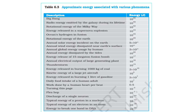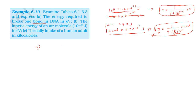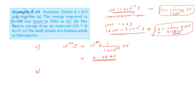The energy required to break one bond in DNA is 10 power minus 20 joules. Converting using 1.6 into 10 power minus 19 electron volts per joule gives approximately 0.06 electron volts. For the second part, the kinetic energy of an air molecule is 10 power minus 21 joules. Converting gives approximately 0.0062 electron volts.